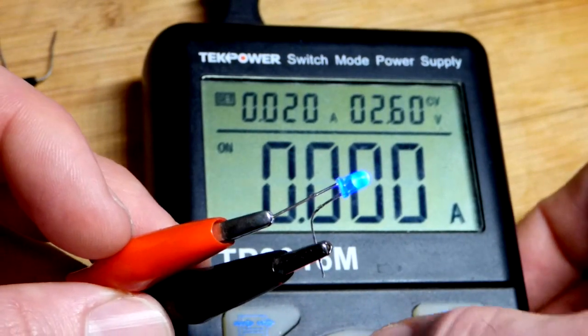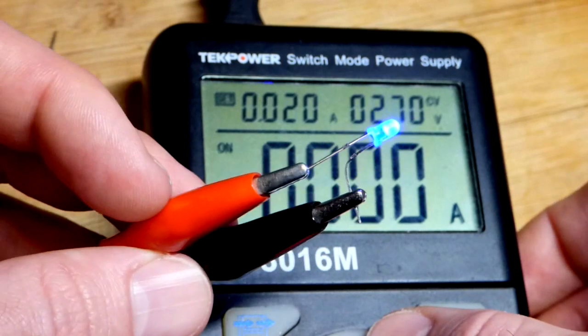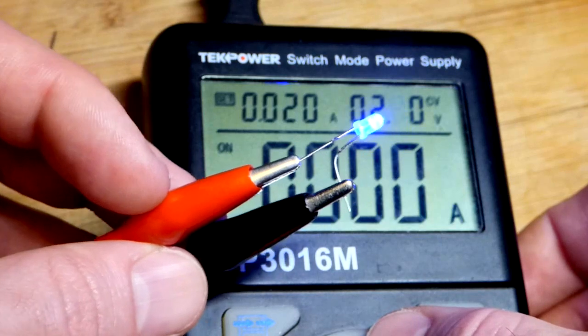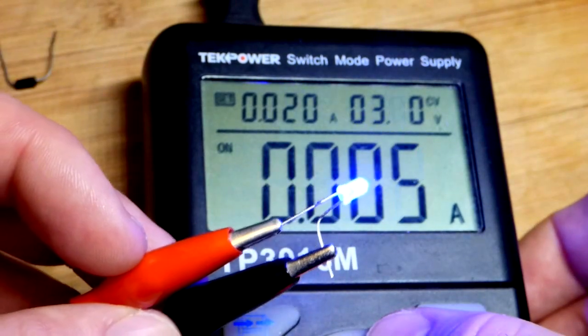So the blue and the green, the cooler color LEDs, they just produce more light even at lower currents. We're not even at one milliamp yet. So we got that 2.8 volts and 2.9. Now we got a little bit more current.